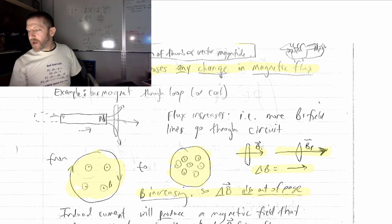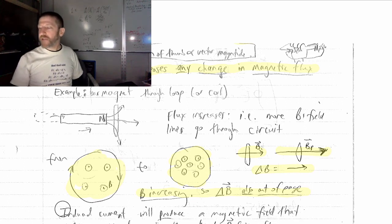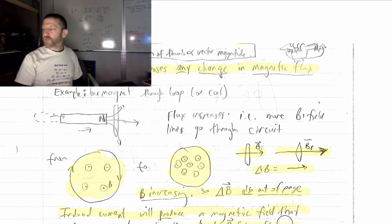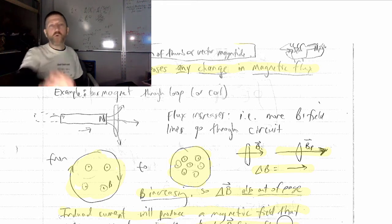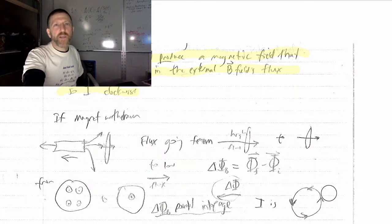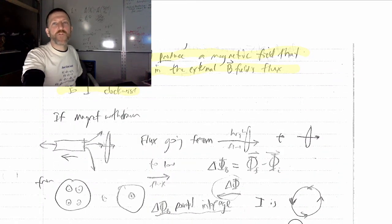The current will be clockwise. Because, according to Lenz, the induced current will produce a magnetic field that opposes any change in the external B field's flux. So, now let's predict, using this law, what will happen if the magnet is withdrawn. So, here is our magnet being withdrawn.